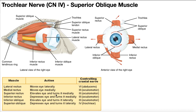Here are our six extrinsic eye muscles. The middle four were all innervated by the oculomotor nerve, which we covered two videos ago. And then at the bottom is our superior oblique muscle — it depresses the eye and turns it a little bit laterally. In this picture, which is a lateral view of the right eye, the superior oblique muscle is visible at the top, and it's a unique muscle.